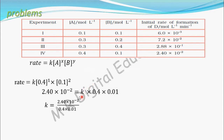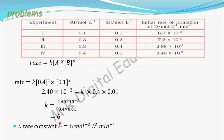Solving for k: k = 2.40 × 10⁻² divided by (0.4 × 0.01), which gives k = 6. The unit of k is L² mol⁻² min⁻¹, because this is a third-order reaction (order = 2 + 1 = 3). For a third-order reaction, the unit of rate constant is L² mol⁻² time⁻¹. Since time is in minutes, the unit is L² mol⁻² min⁻¹.